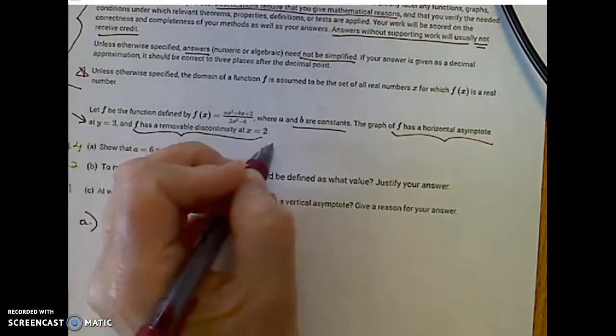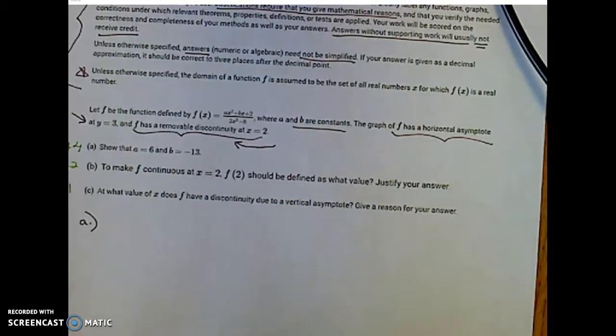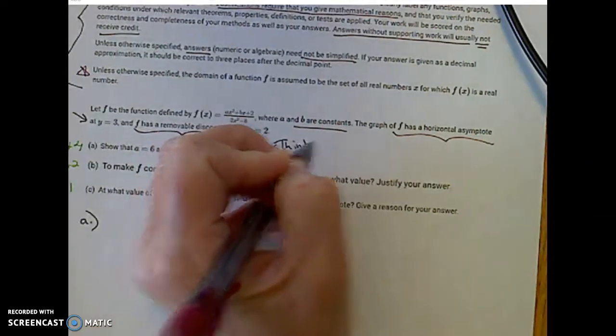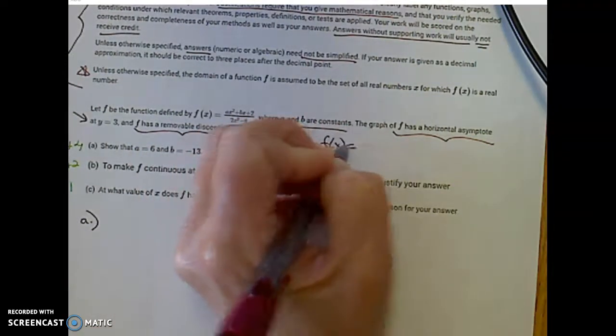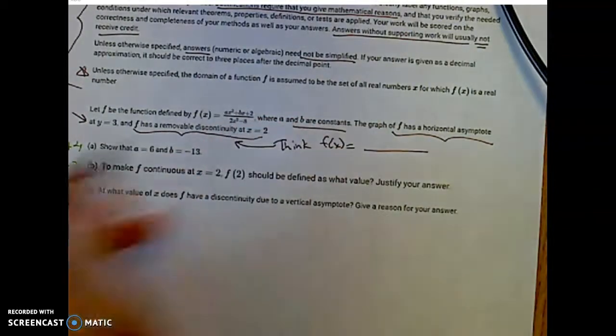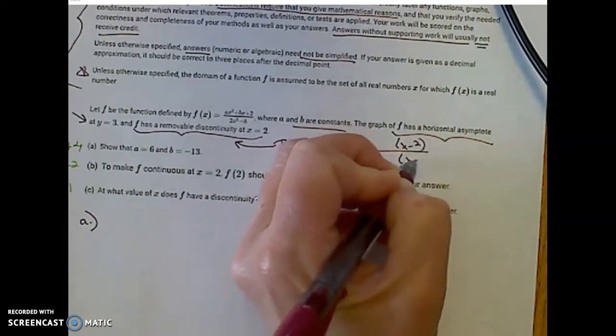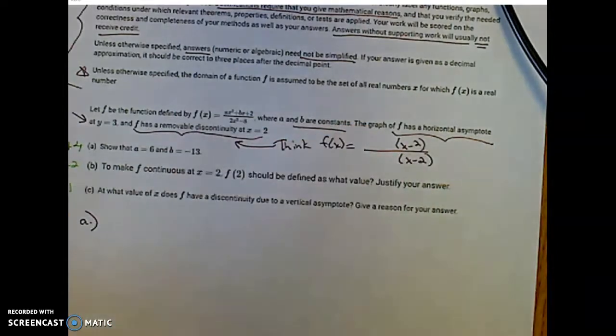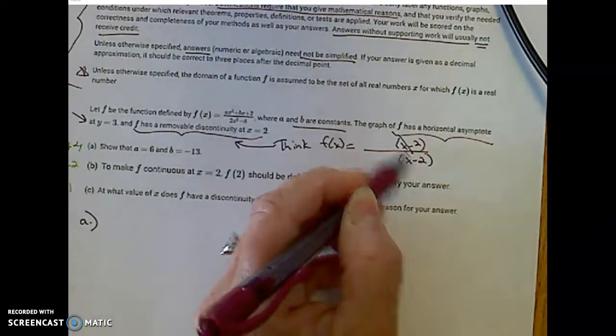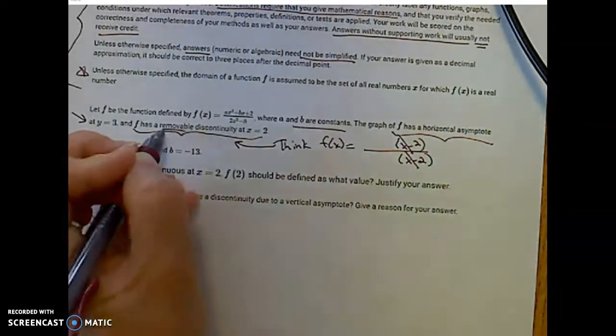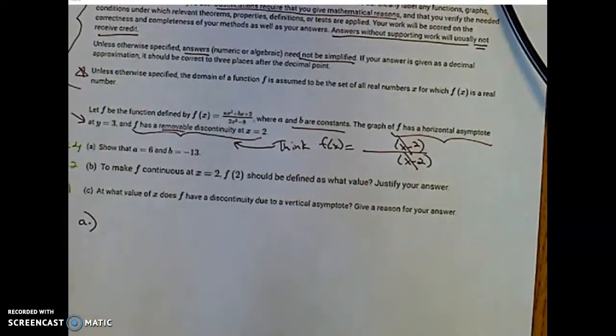When I see removable discontinuity at x equals 2, this is just what I think of. That means that function must have a factor, if x equals 2 is removable, goes into a factor of x minus 2. I have to have that common factor of x minus 2 in the top and the bottom for removable discontinuity.